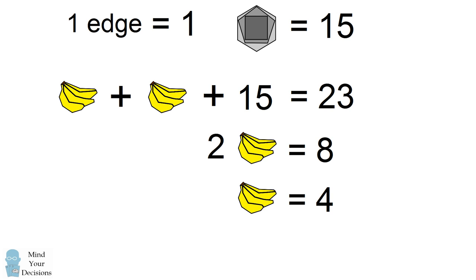Now look closely at this bunch of bananas. There are four bananas in the bunch and that's equal to 4. So that would simplify to mean one banana is equal to 1.